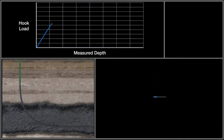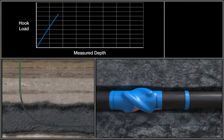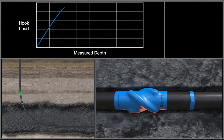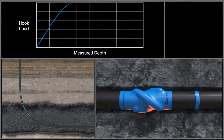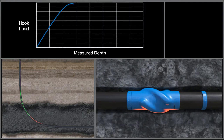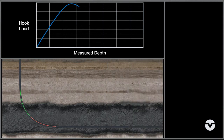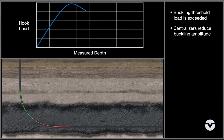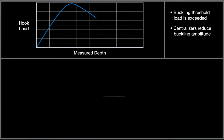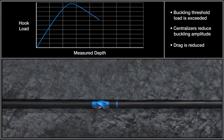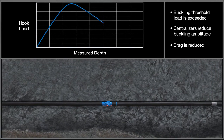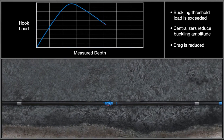The smooth profile and rigid steel unibody design of the Volant Hydroform Centralizer allows it to easily overcome irregularities in the wellbore, resulting in lower effective friction and lower drag. When the buckling threshold of the string is exceeded and buckling begins, the centralizers and their optimized placement work to reduce the amplitude of the buckling, eliminate the majority of the additional side load forces, and minimize the buckling-induced drag that would otherwise be experienced in a poorly centralized string.